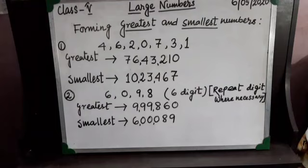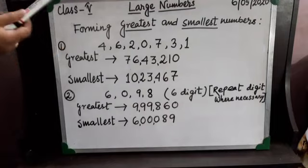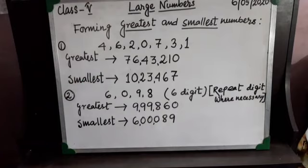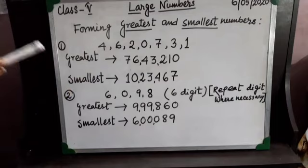Now for the smallest number — remember that no number can start with 0. So we have to choose the next smallest digit after 0, which is 1. We put 1 first, then 0, then arrange the remaining digits in ascending order — small to big. In this way my smallest number is 10,23,467.